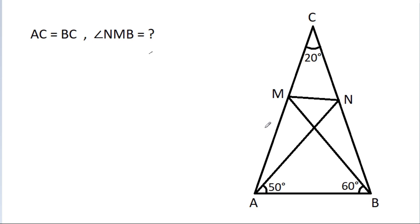In this video, we have given that angle ACB is 20 degrees, angle NAB is 50 degrees, angle MBA is 60 degrees, and AC is equal to BC. We have to find angle NMB.